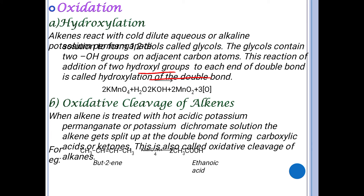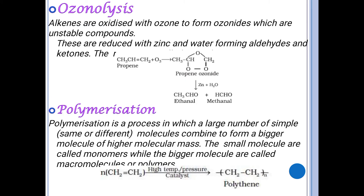Oxidative cleavage splits alkenes to form smaller compounds. In ozonolysis, alkenes are oxidized with ozone to form ozonides, which are unstable compounds; these are then reduced in the presence of zinc to give aldehydes. Polymerization is a process in which large numbers of simple molecules (monomers) combine to form larger molecules with higher molecular mass; the large molecule is known as a polymer.